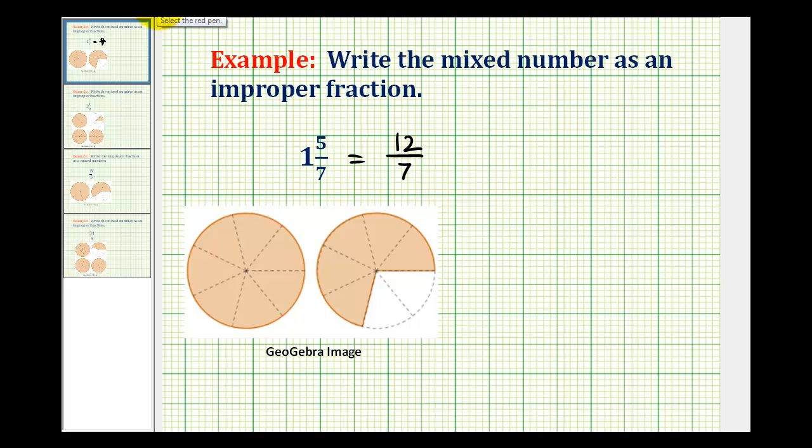If we look at our model, we can see why this process works. Here's the model for one and five-sevenths, and one is equivalent to seven-sevenths, and if we add five-sevenths, you can see we have twelve-sevenths.